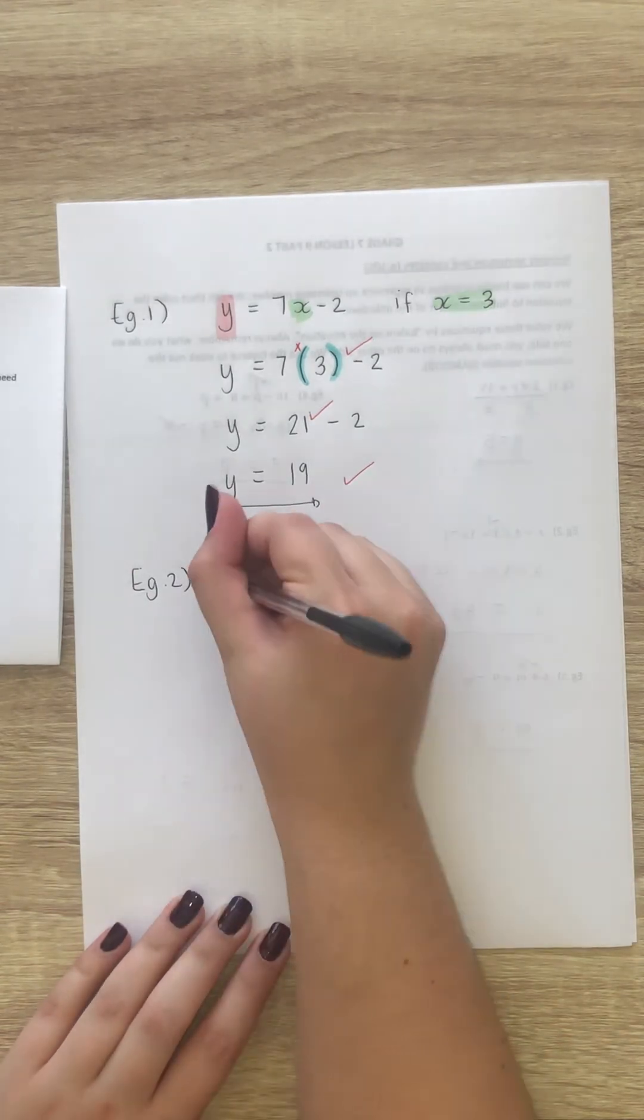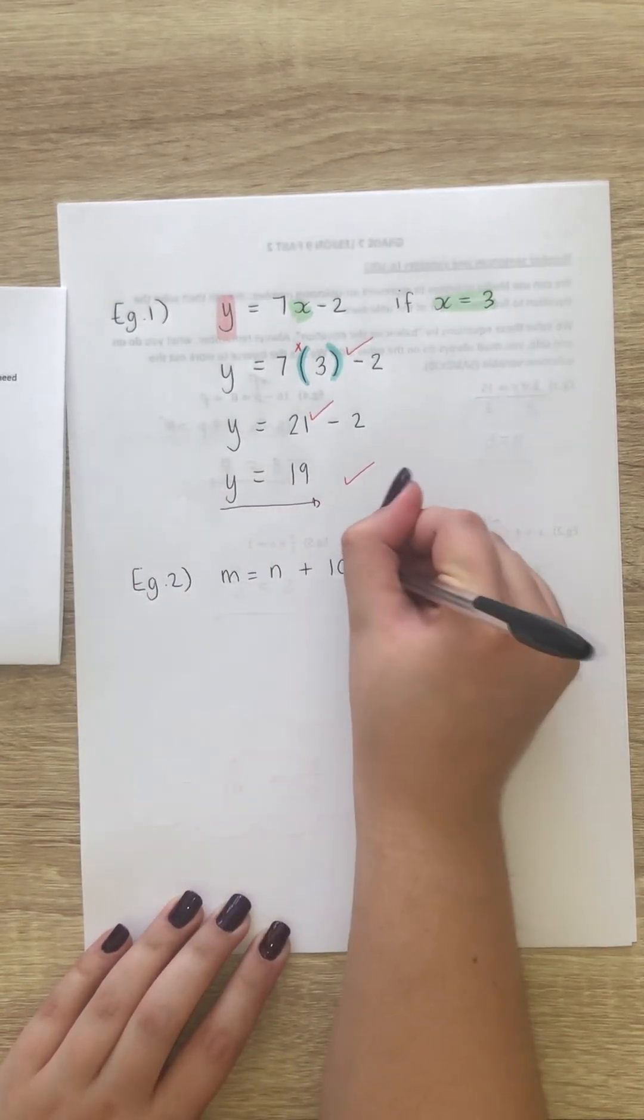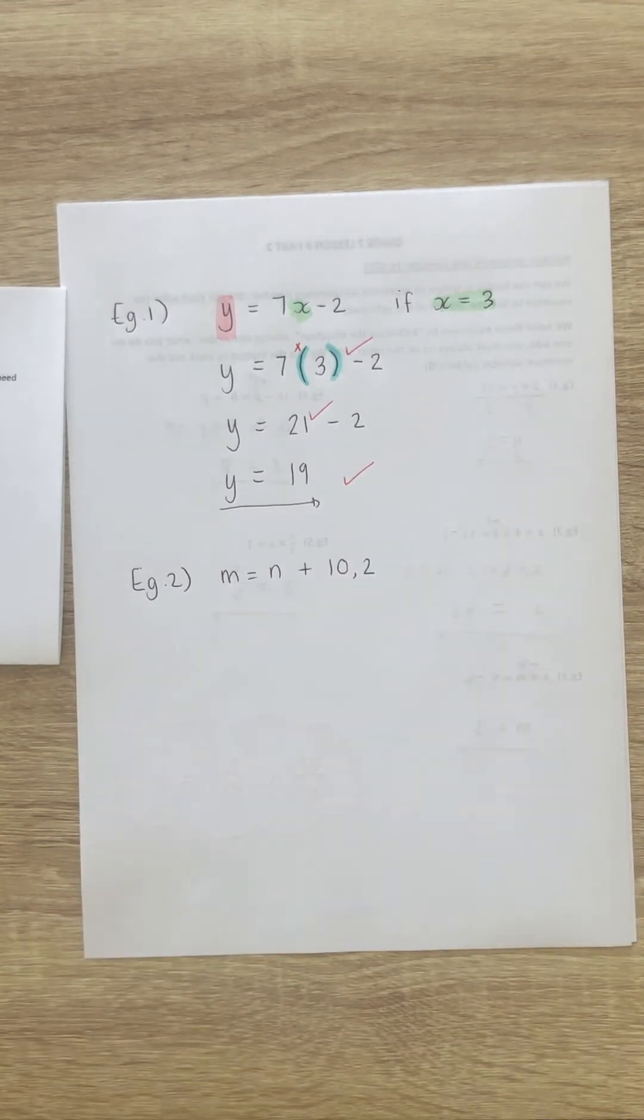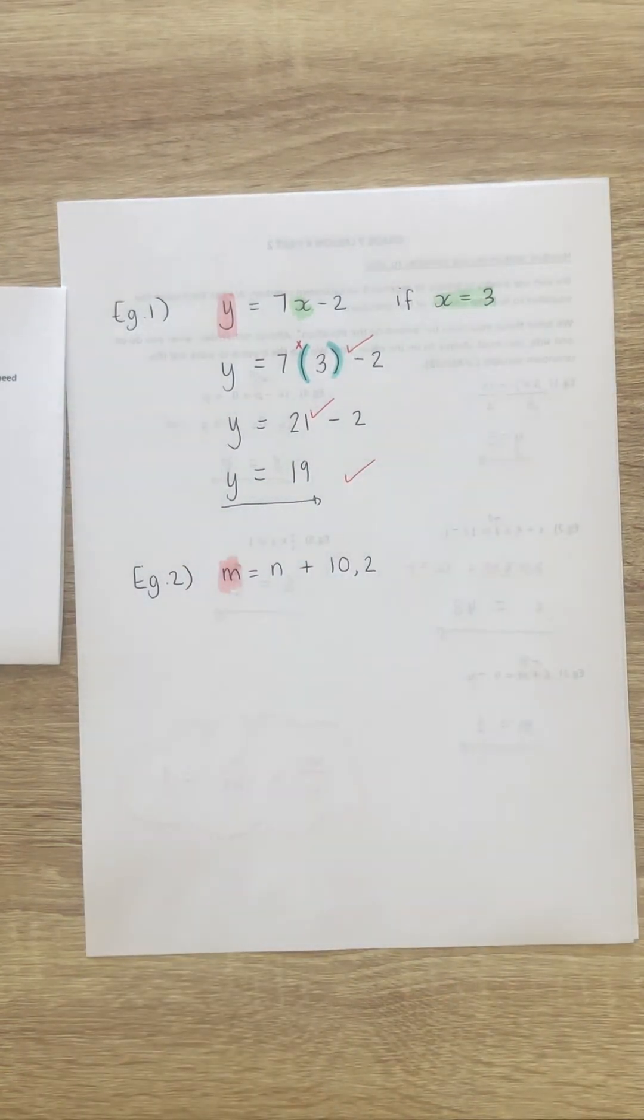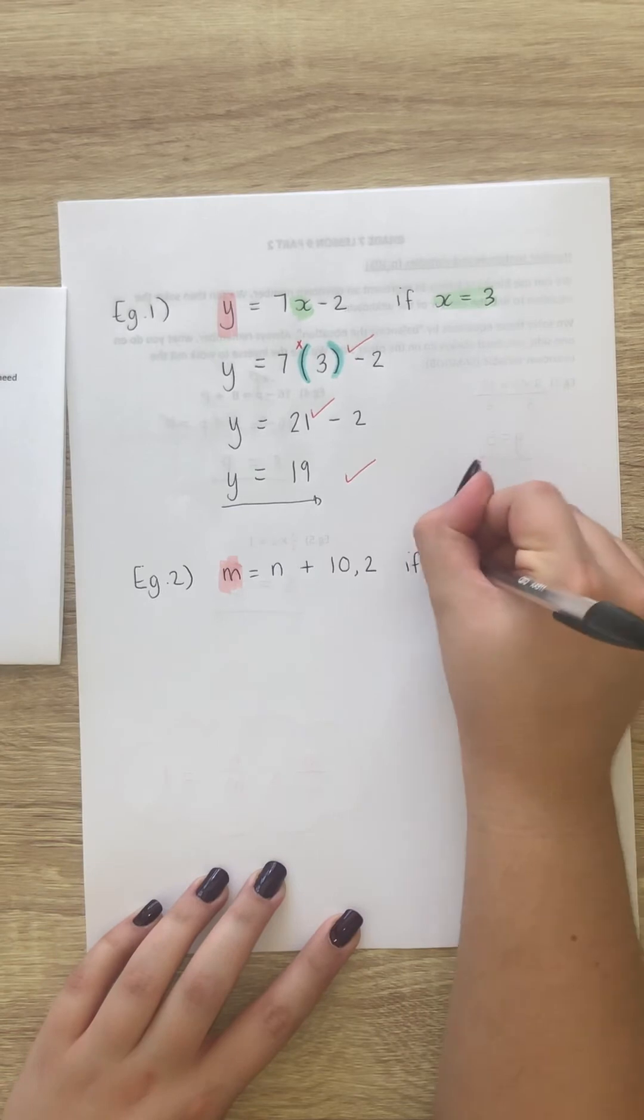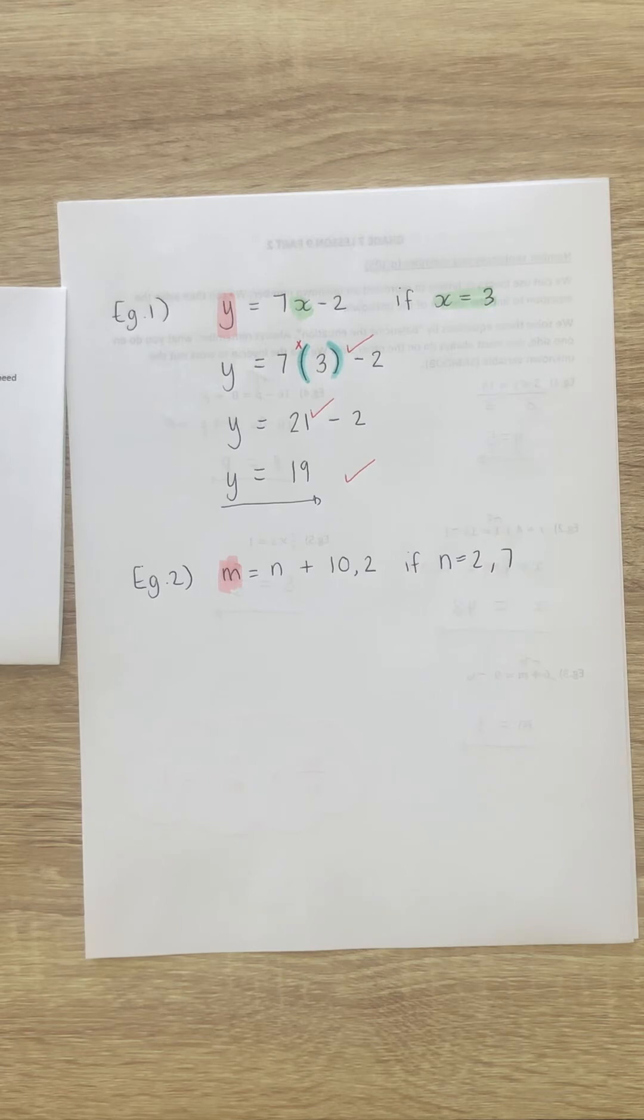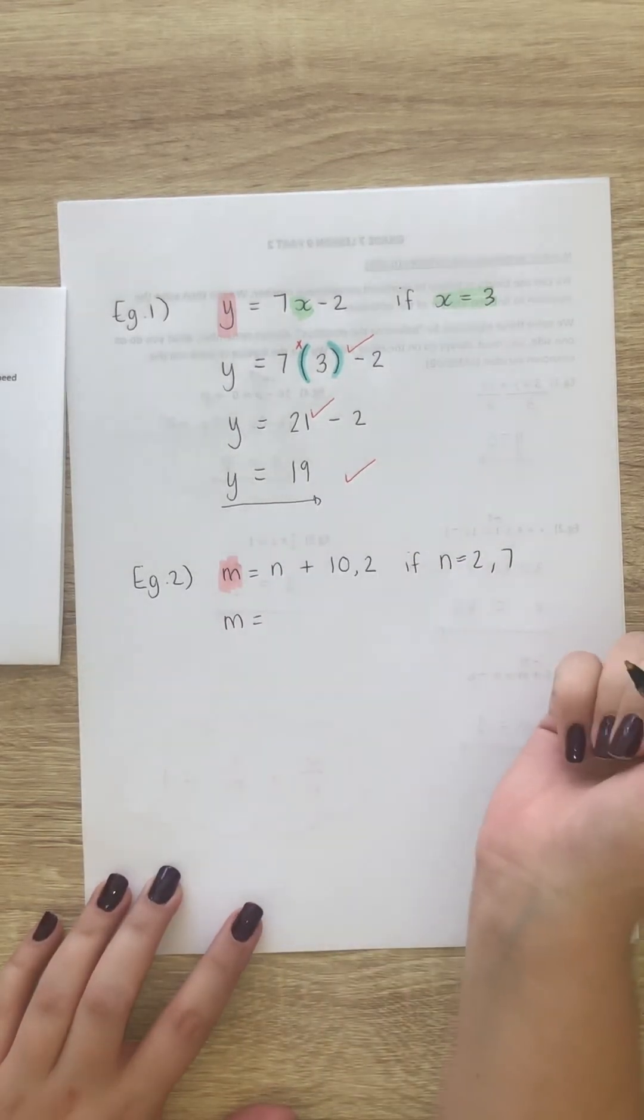Example 2 says, if m equals n plus 10 comma 2. Determine the value of m. So, once again, we're looking for that value. If n is equal to 2 comma 7. Once again, that must be your first line in your sum. Now, we substitute in. Remember to substitute into brackets.